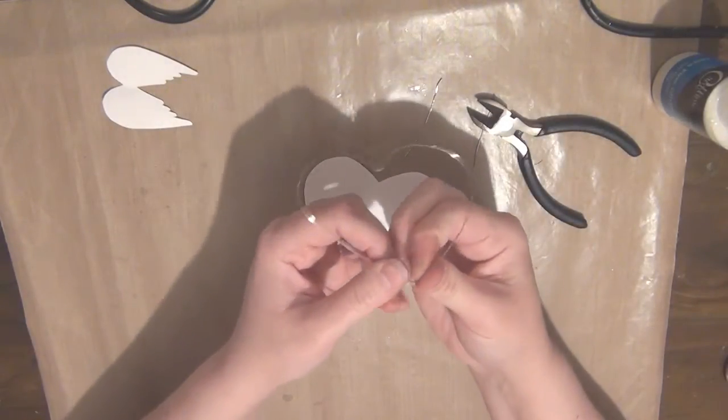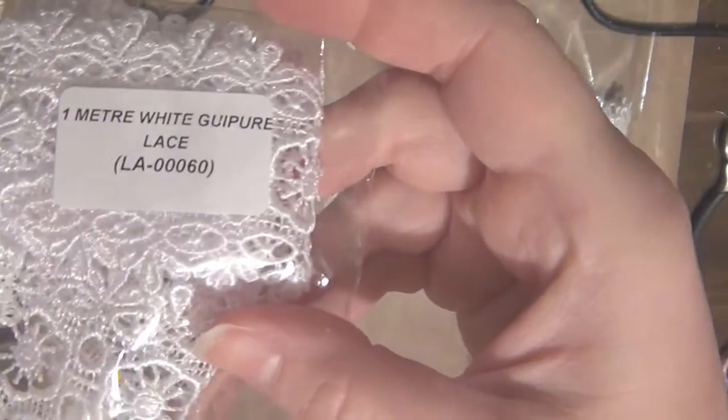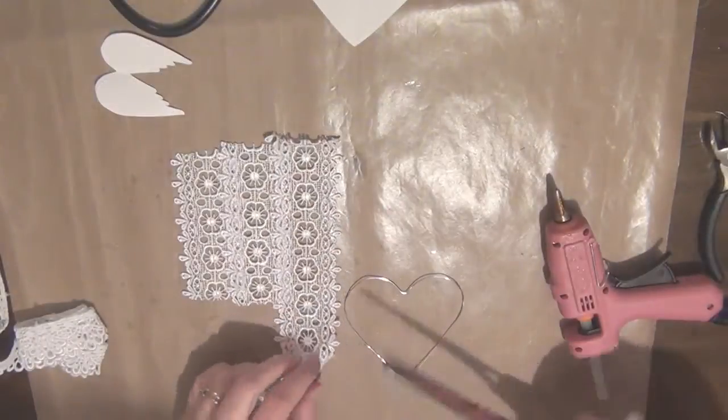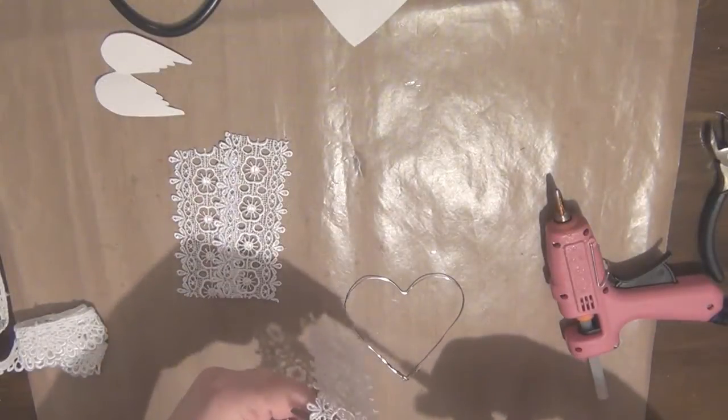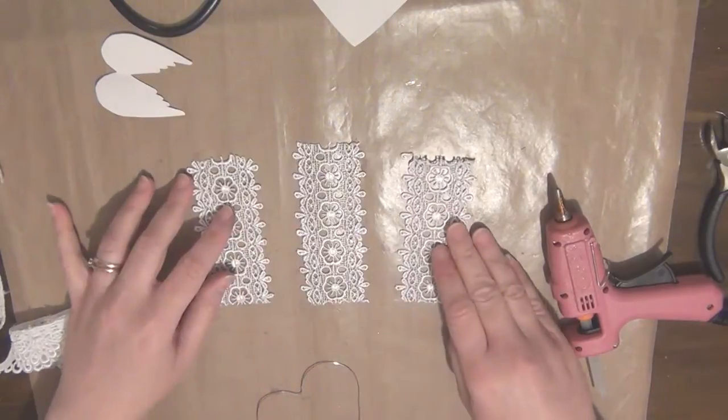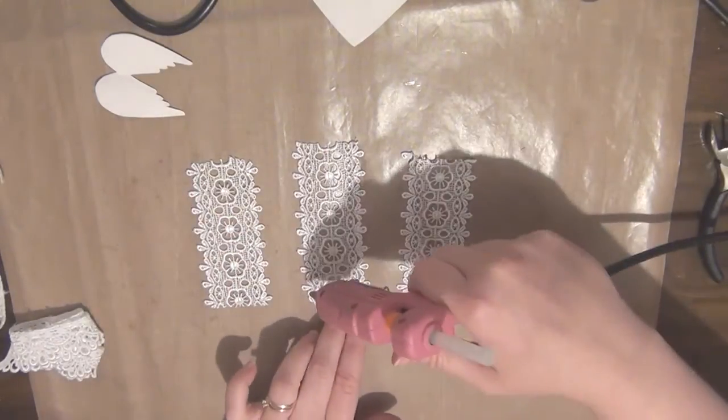Once I finish doing that, I'm going to take some lace and I'm going to cut three pieces of this lace. This is what I'm going to need to cover that heart. All I'm doing here is attaching those laces together, adding a little bit of glue on one side of the lace and adhering these pieces together.